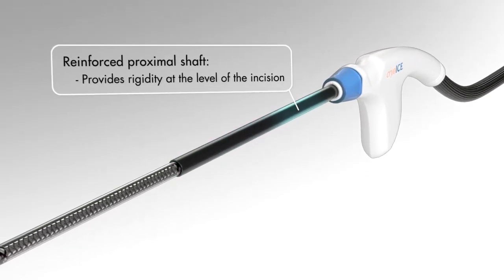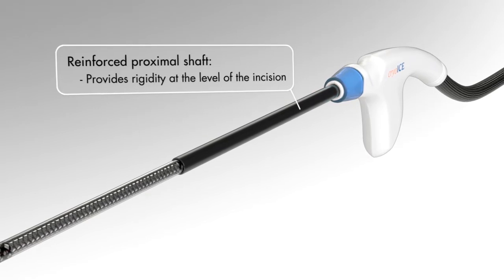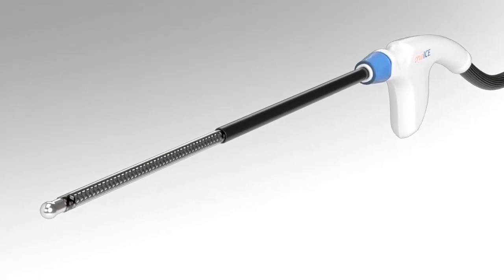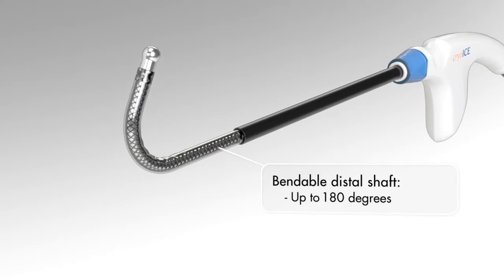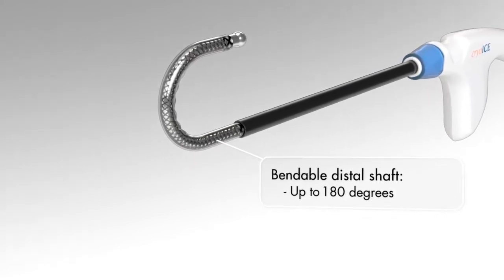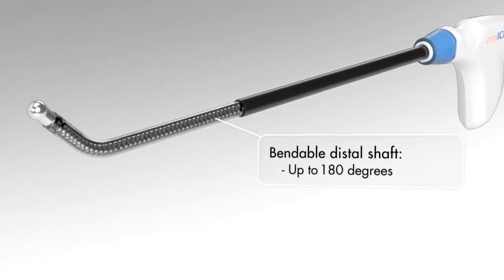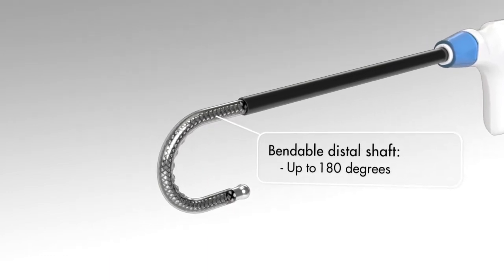The reinforced proximal shaft provides rigidity at the level of incision points such as a trocar, robotic service port, or thoracotomy. The bendable distal shaft is designed to be bent up to 180 degrees with a provided tool while maintaining the ability to deliver adequate pressure to the intercostal nerve.